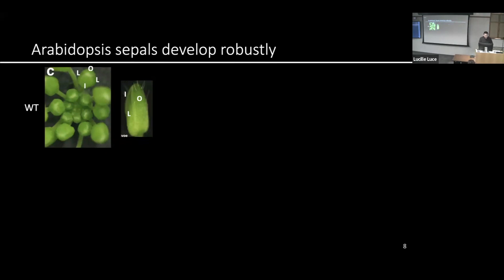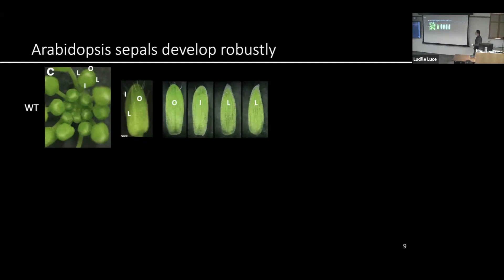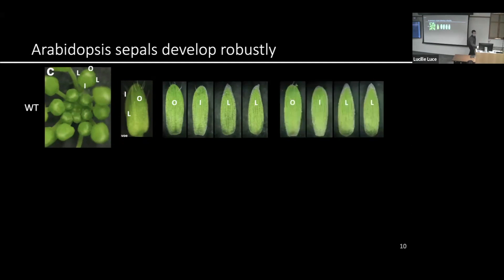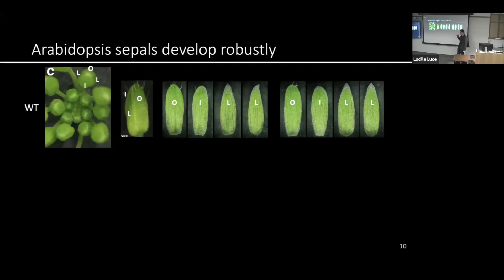In addition to robustness in number and position, the sepals are also robust in size. If you dissect down the four sepals from the same flower, or from different flowers, you can see that they always develop to the same mature size. So in wild-type, the sepals develop robustly in terms of their number, position, and size.